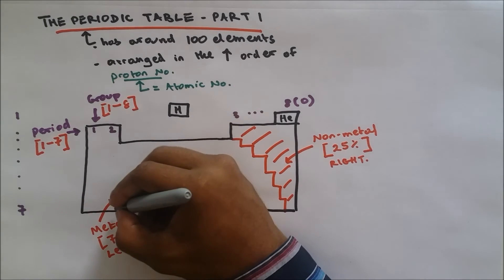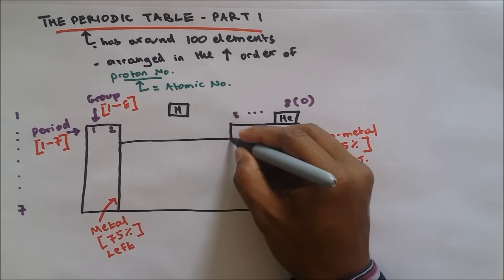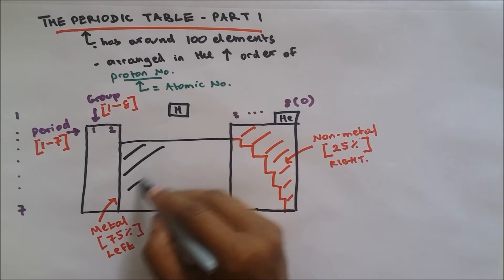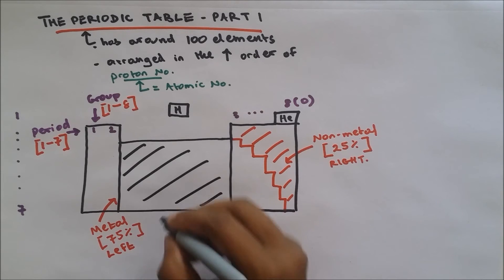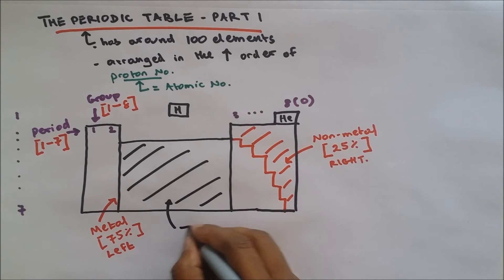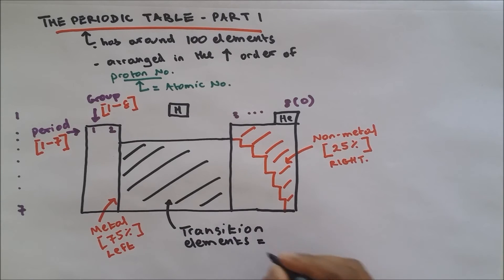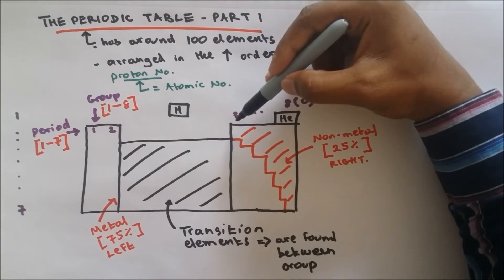Now the elements in the middle of the periodic table are metals and they have a special name. It's called transition elements or transition metals because they are metals. And transition metals or elements are found between group two and group three.